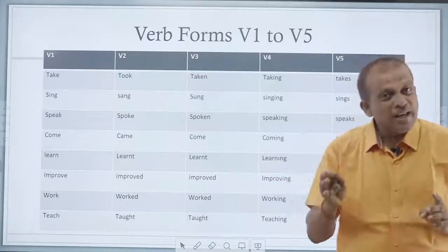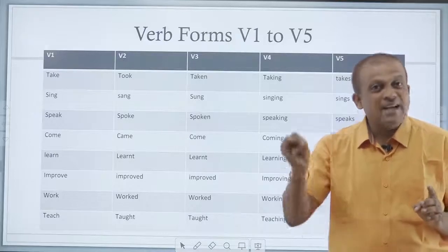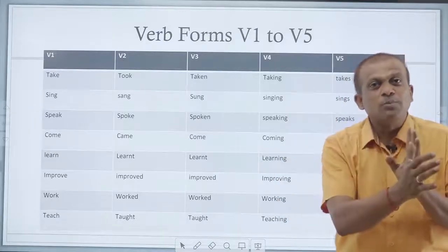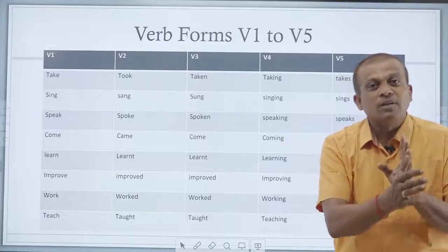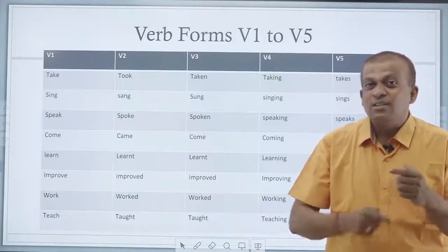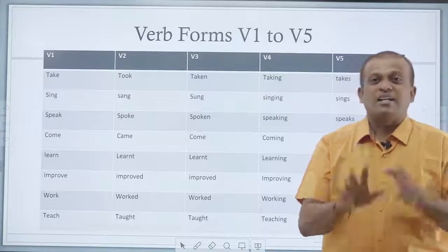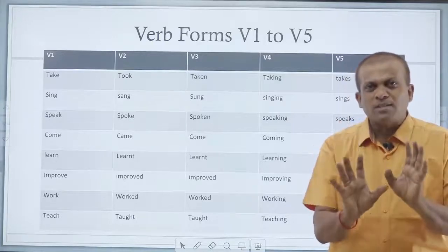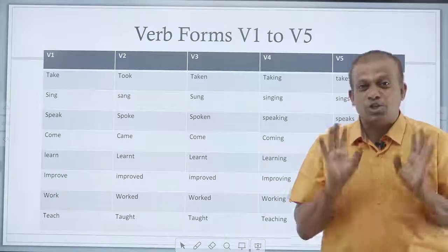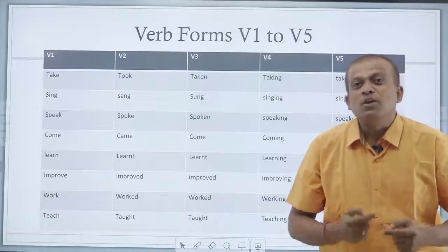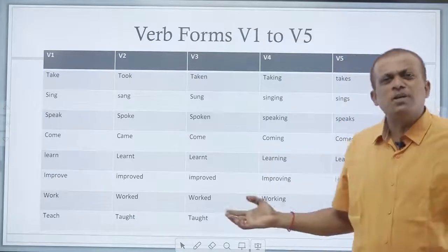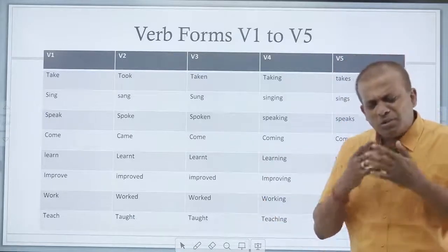For example: play, played, played, playing, plays — verb 1 to verb number 5. Attend, attended, attended, attending, attends. So I have to master how to use these 5 verbs in English, and then see where grammatical errors will happen. Undoubtedly, you will speak without any error.